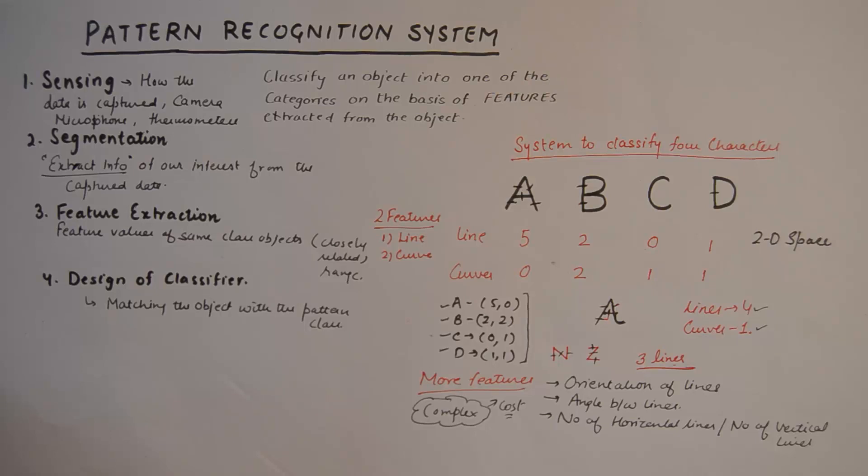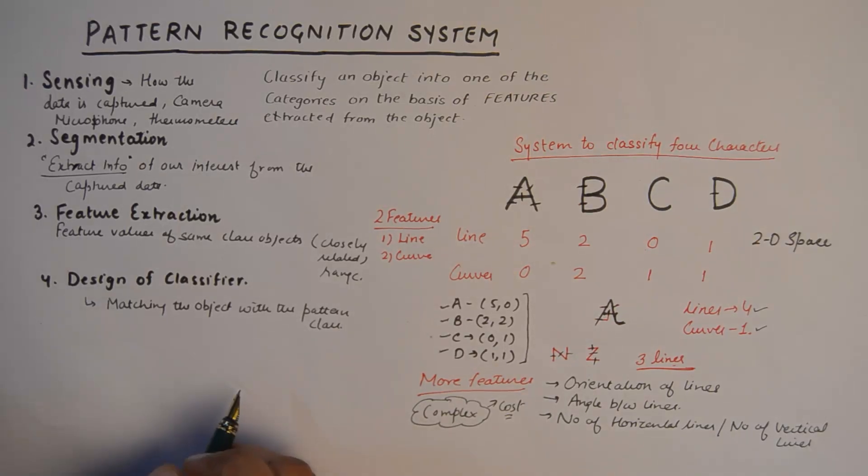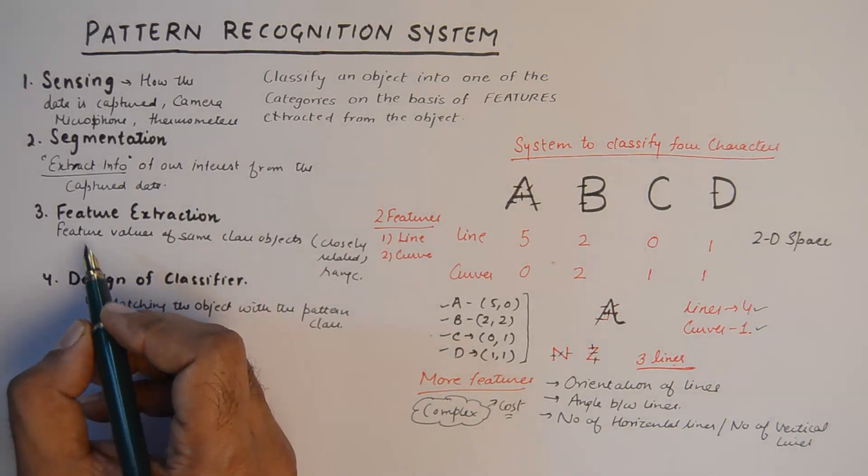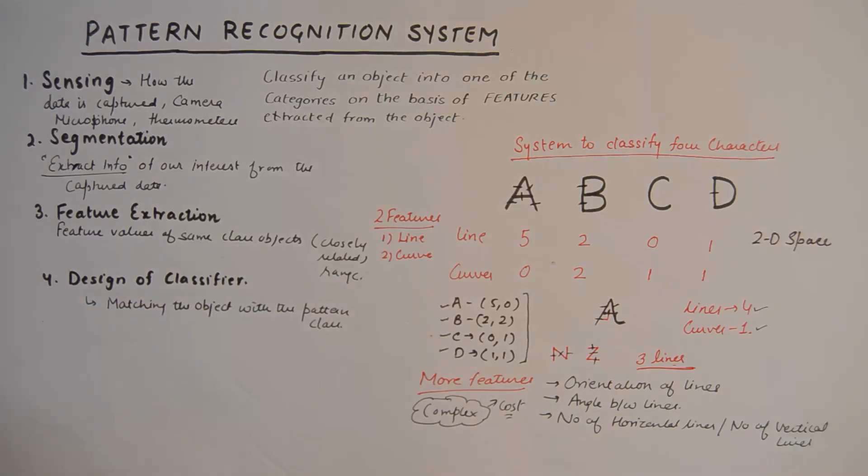And the next block is feature extraction. Feature extraction says that the feature values of the same class objects should be closely related to each other. So if an object belongs to a certain class, the values of the features of that object should remain within the limits of that class. That is one important point of feature extraction design.